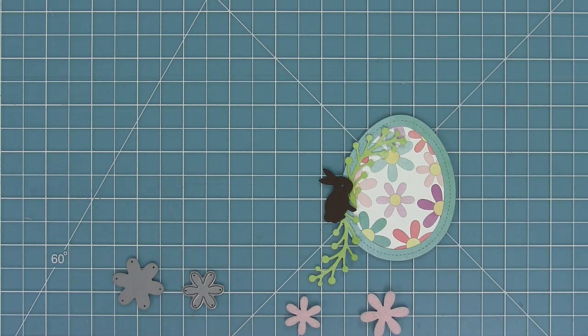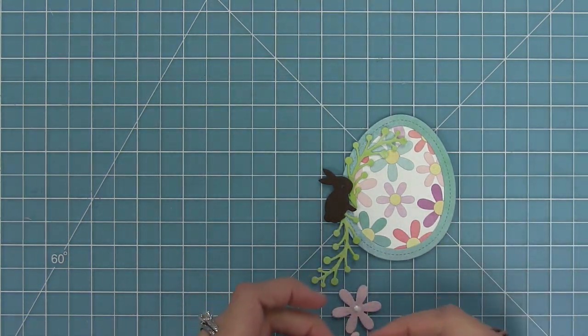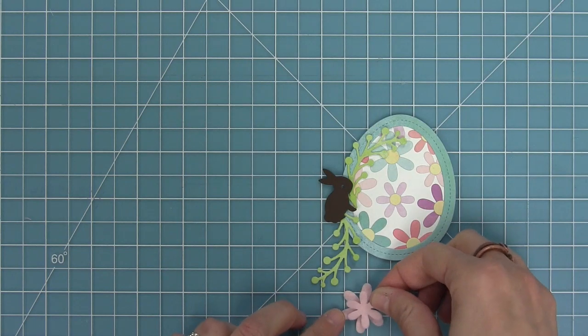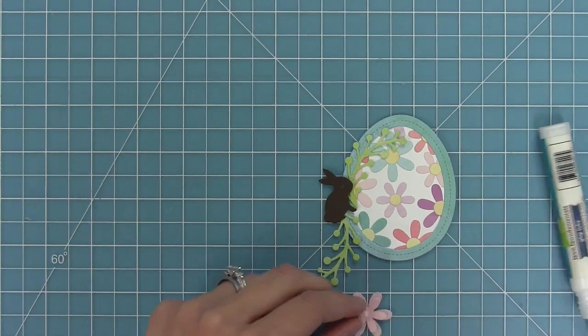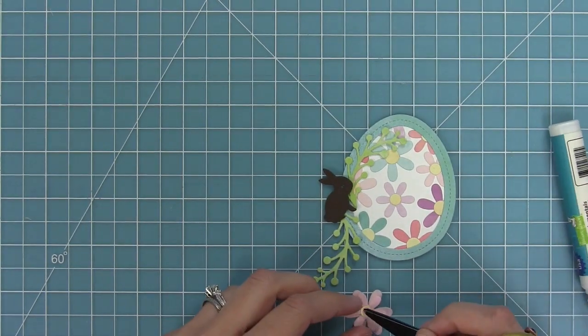So I'm going to take some glue and layer those two flowers on top of each other and then I'm going to add some extra of those little yellow flower centers that were paper and layer that on top of the flower as well.